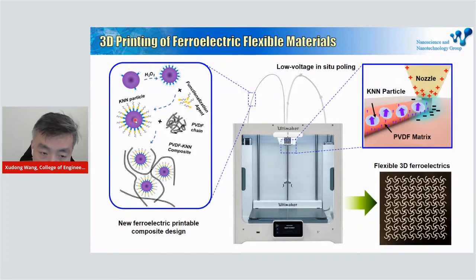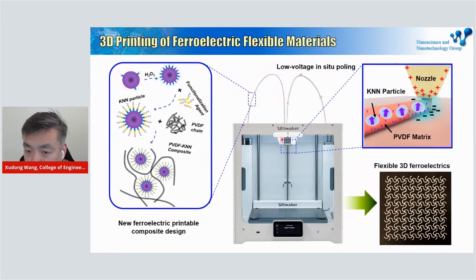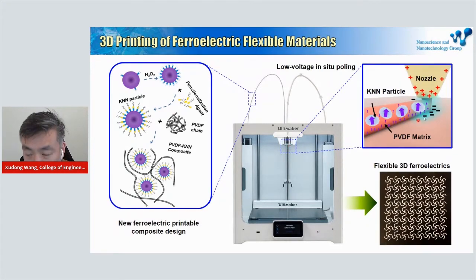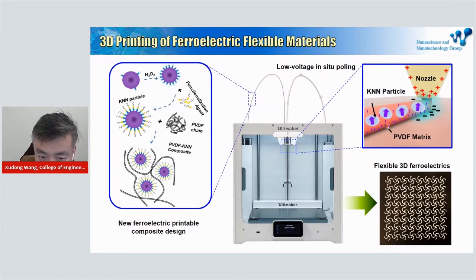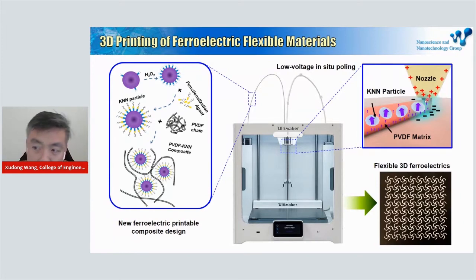We can imagine these nanoparticles as very tiny small batteries. This new composite can be printed directly from our machine. We also engineered our machine nozzle to apply an electric field between the nozzle and the supporting surface. When the materials are printed, this electric field aligns those tiny nanoparticles in the same direction — like connecting all the small batteries in series — so the electric output can be significantly enhanced.